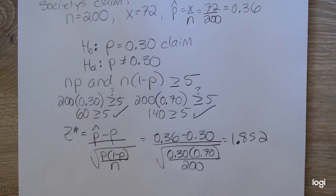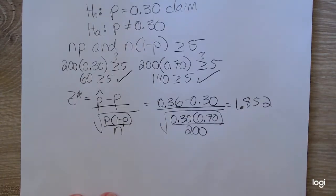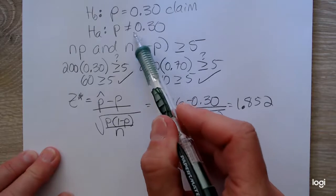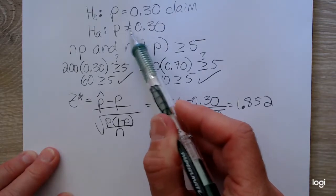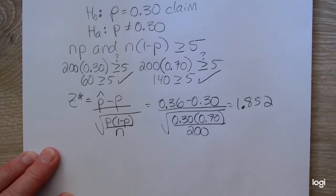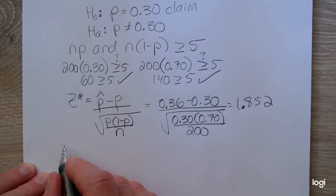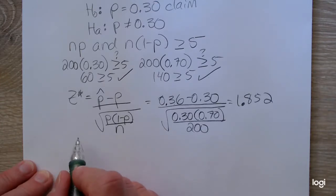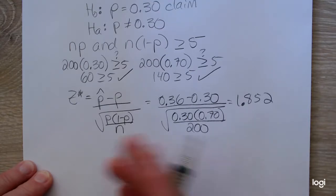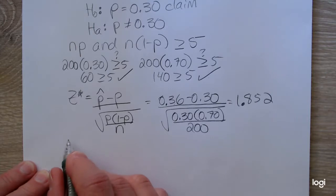So to know whether or not this is large enough to reject the null hypothesis, I need to find the critical values. Because this is a two-tailed test, because I have the case of not equals in the alternative, I know this is going to be a two-tailed test. So using the critical value method, I need to find those two critical values. And to do that, I need to remember that I need to divide alpha, which is 0.05, by two. Okay, so I have equal areas of rejection.